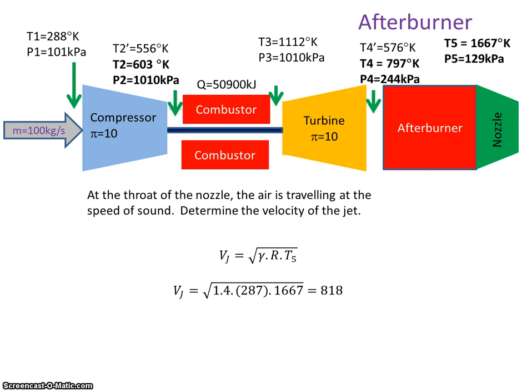Right, the critical pressure was greater than atmospheric pressure, which is 101, therefore the nozzle was choked. And I can therefore calculate the velocity of the gas at the jet nozzle using this formula. And when I plug those numbers in, I get 818 meters per second.